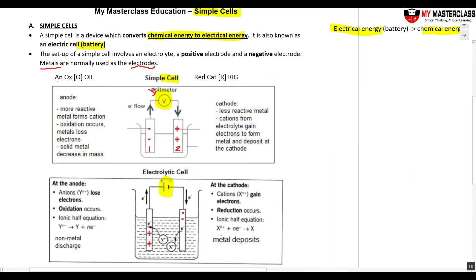Remember these terms: an ox and then red cat. An ox — this is anode, and oxidation occurs at the anode. Oxidation is losing electrons. Generally, the anode is going to be the more reactive metal. Since more reactive metals tend to lose electrons to form cations, the anode will be the more reactive metal. One of the observations we will see is this more reactive metal will decrease in mass.